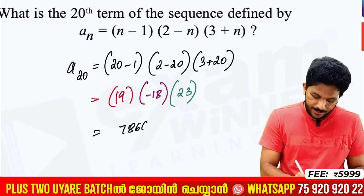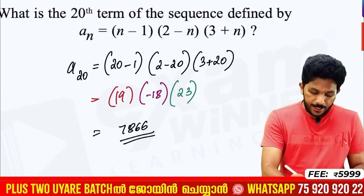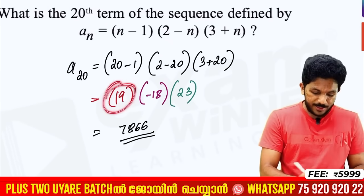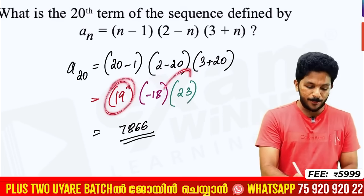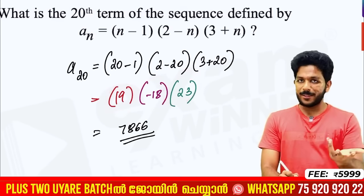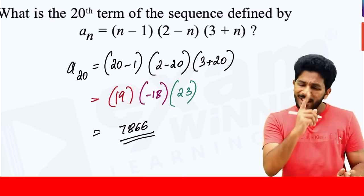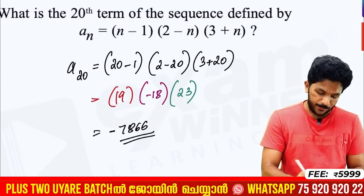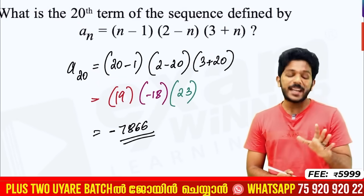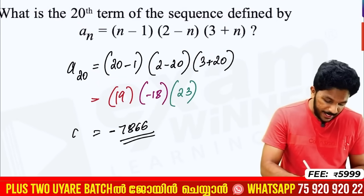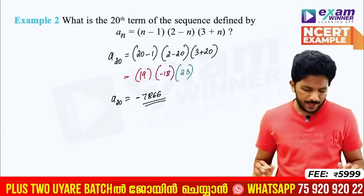The result involves 7, 8, 6, 6. There is a positive and a negative part. Plus multiplied by plus gives plus, and minus multiplied by minus gives plus. The 20th term works out to minus 786 by 6. This is example 2.